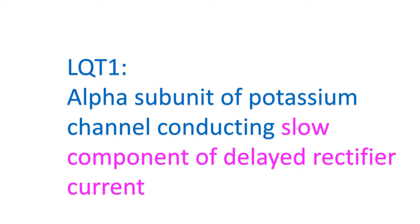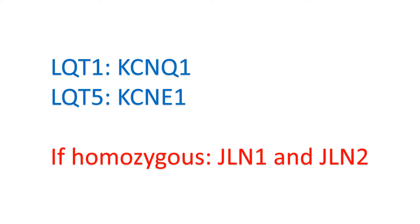LQT1 is due to a defect in the gene encoding for the alpha subunit of the potassium channel conducting the slow component of the delayed rectifier current, which is the major repolarizing current during phase 3 of the cardiac action potential. Defect in the beta subunit leads to LQT5. The gene for LQT1 is KCNQ1, and in those homozygous for it, JLN1 is manifested. The gene for LQT5 is KCNE1, and JLN2 manifests when it is homozygous. JLN stands for Jervell and Lange-Nielsen syndrome.